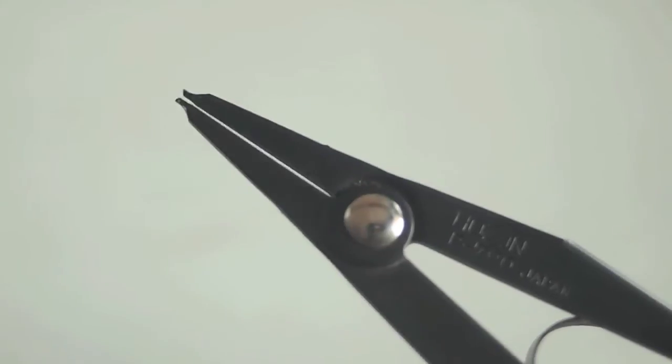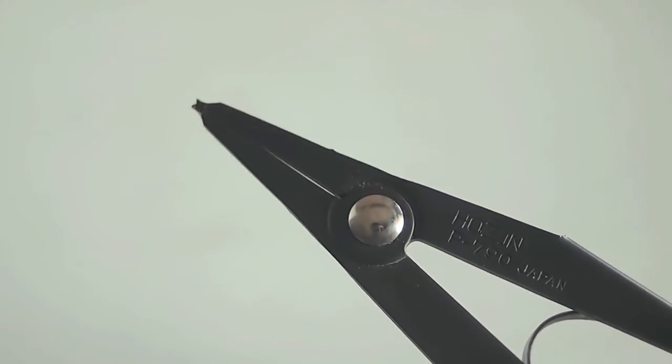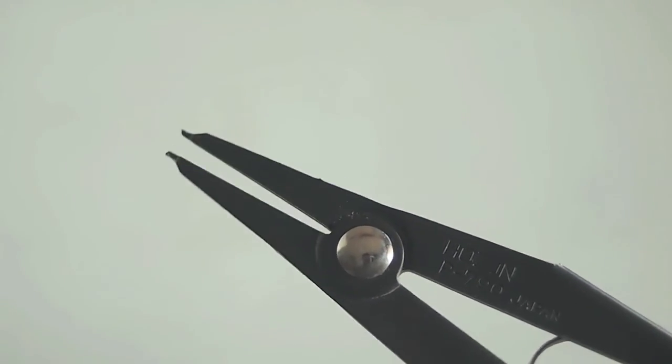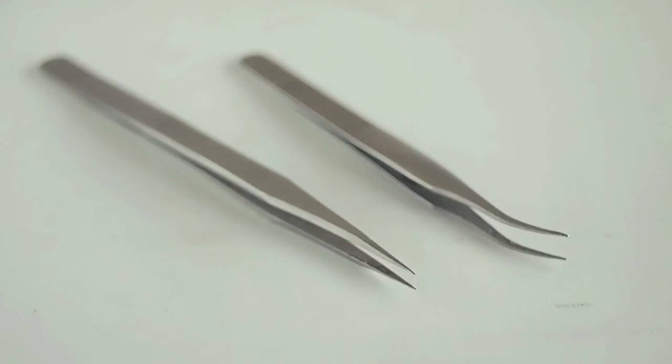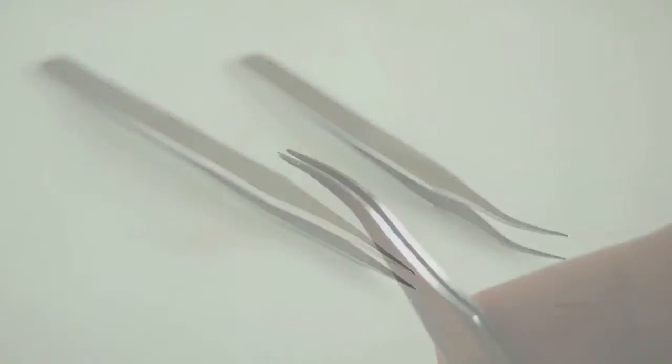Also, snap ring pliers are used to remove E-rings and C-rings. Non-magnetic tweezers are used to pick up small parts, such as screws and springs.